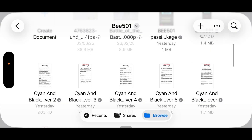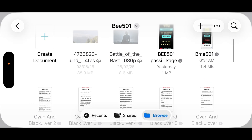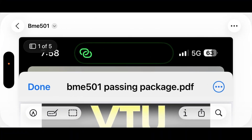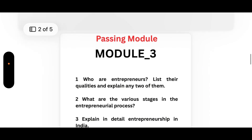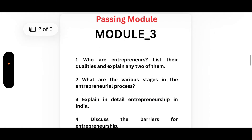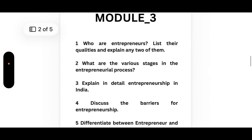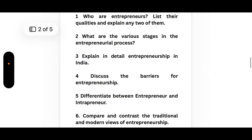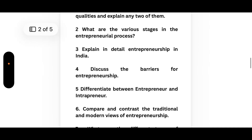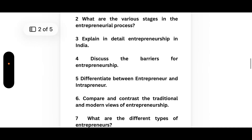Now coming to Module 3, which is again a passing module. First, who are entrepreneurs? List their qualities and explain any two of them. Second, what are the various stages in the entrepreneurial process? Third, explain in detail entrepreneurship in India. Fourth, discuss the barriers for entrepreneurship.